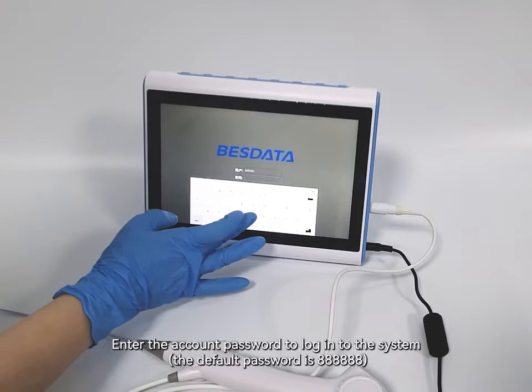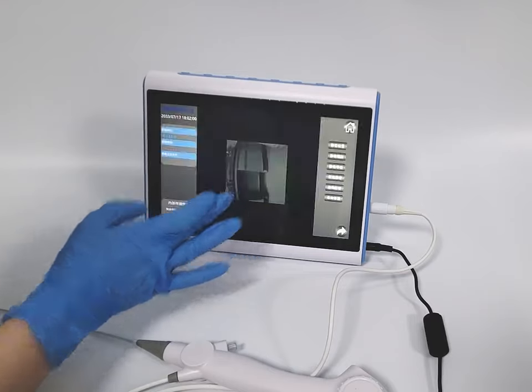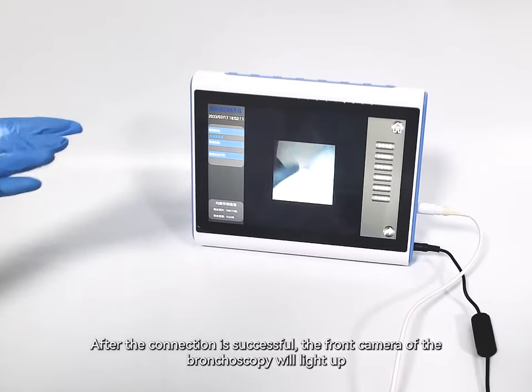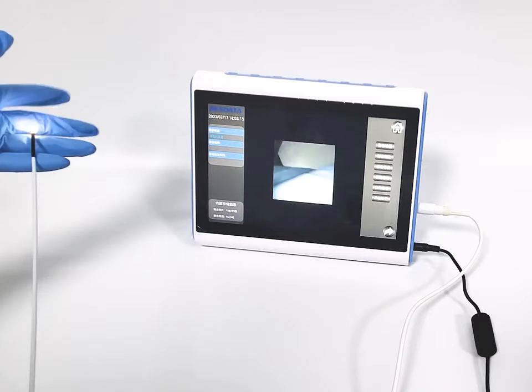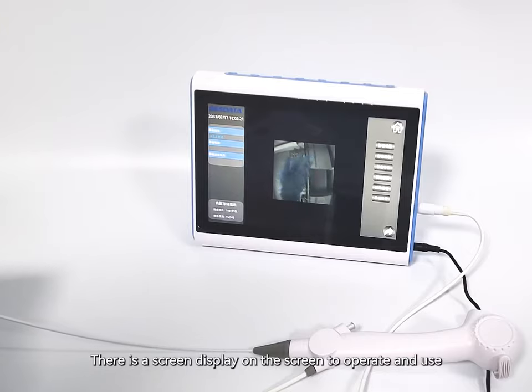Enter the account password to log into the system. After the connection is successful, the front camera of the bronchoscopy will light up. There is a screen display on the screen to operate and use.